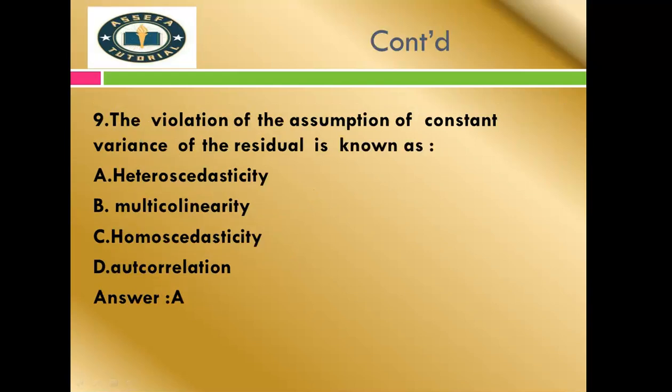Question number nine: Violation of the assumption of constant variance of residual. There are different violations of the simple linear regression model. Options: A) Heteroscedasticity, B) Multicollinearity, C) Homoscedasticity, D) Autocorrelation. The variance of the error term or residual must be constant.